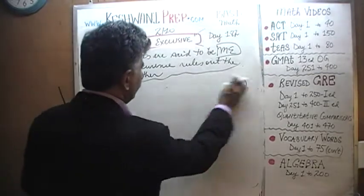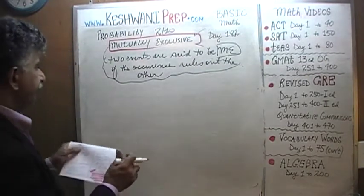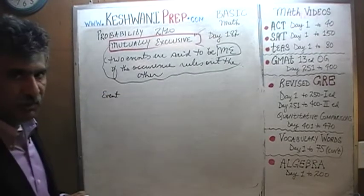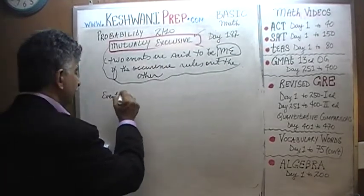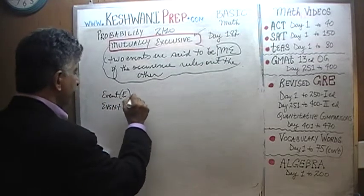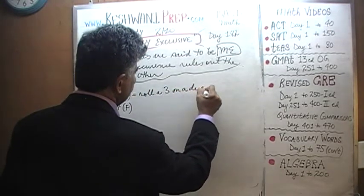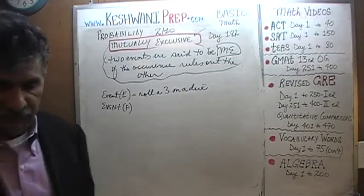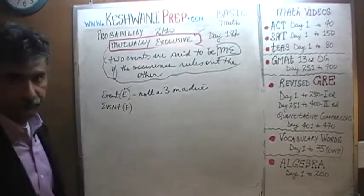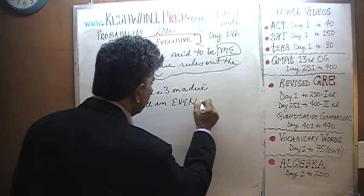Let's define Event E and Event F — not A and B since we're using those in our main problem. Event E is the event of rolling a 3 on a die. Event F is rolling an even number. The question is: if we are asked to find the odds of rolling either E or F, what are the odds that I will either roll a 3 or an even number?